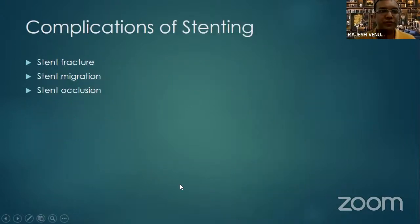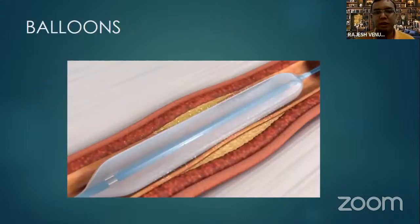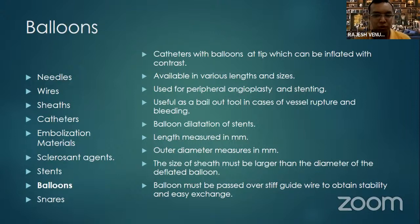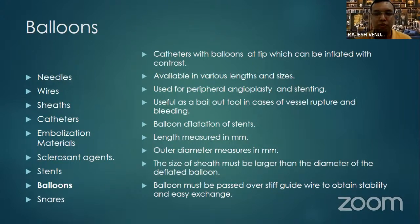Complications of stenting include stent fractures, stent migration, and stent occlusion. Moving to the next topic — balloons. Balloons are modified catheters with a balloon at the tip that can be inflated with contrast. Available in various lengths and sizes, they are used for peripheral angioplasty, stent placement, and as bailout devices when vessel rupture occurs — keeping the balloon inflated prevents vessel collapse while a stent graft is prepared.